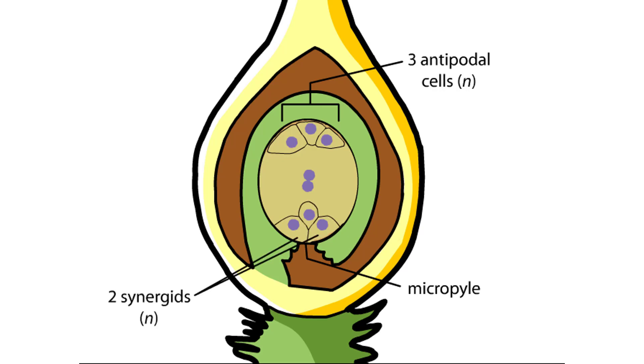Two are called synergids, and the other is the egg. Finally, two nuclei called polar nuclei remain together in one large central cell. The egg cell and the single cell with two polar nuclei will eventually take part in a double fertilization event.